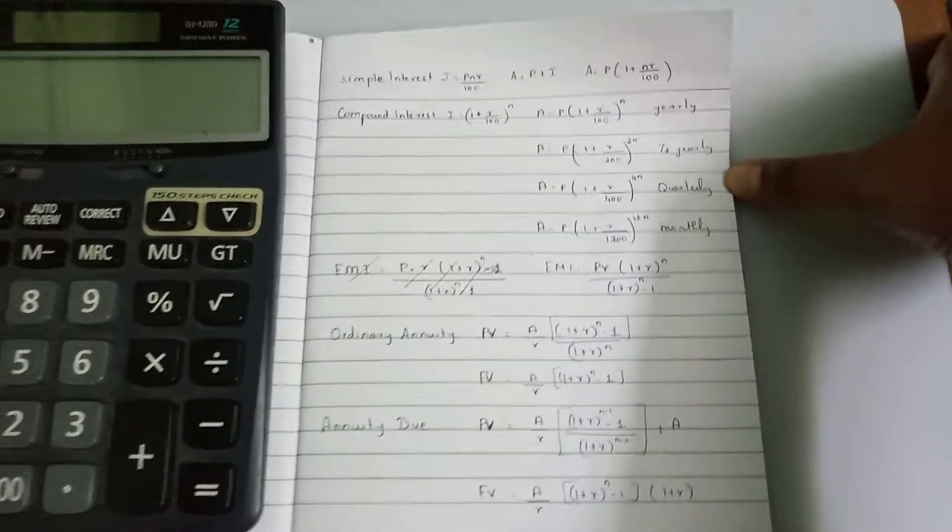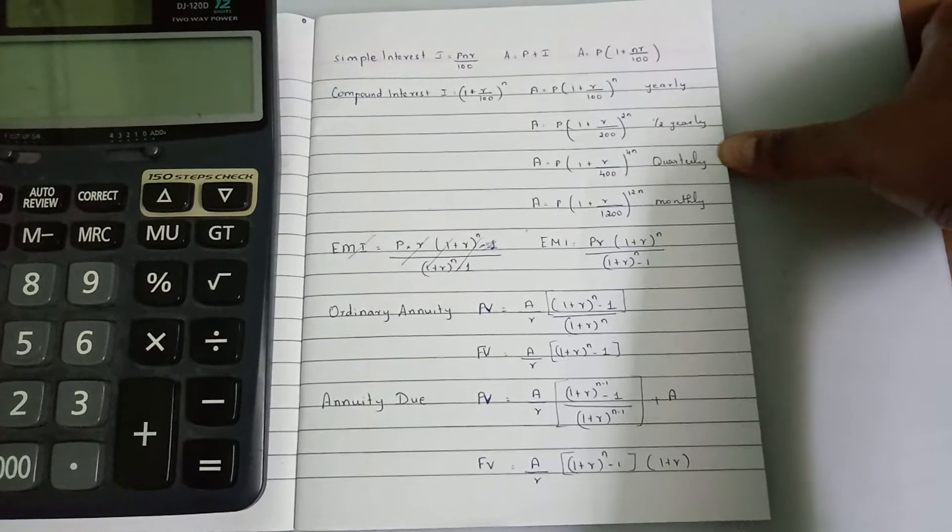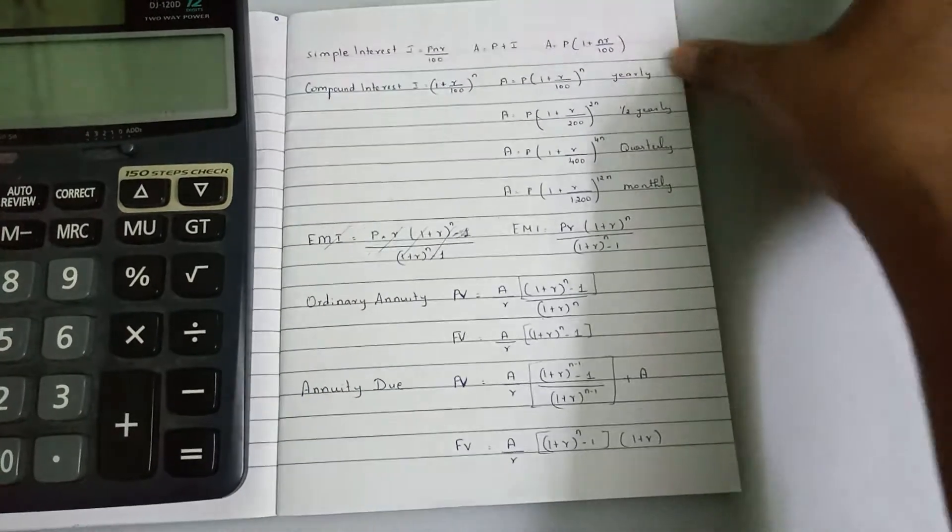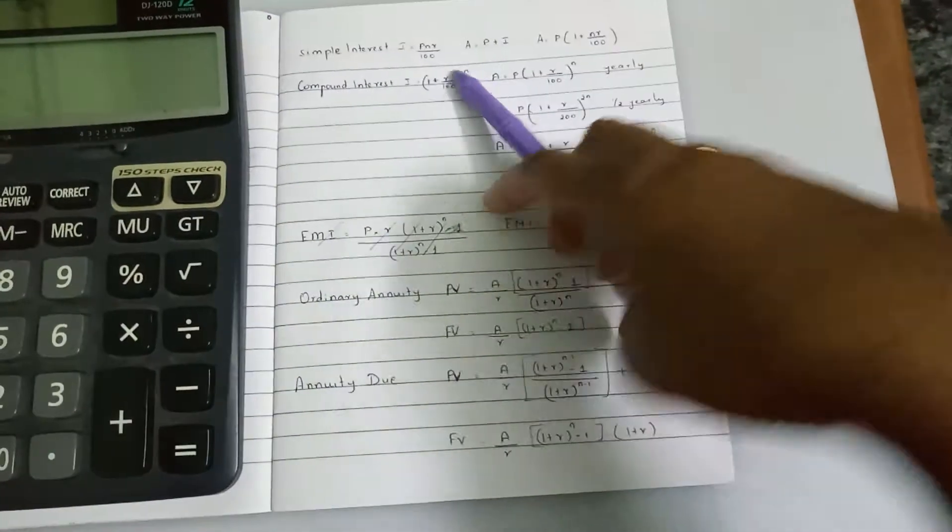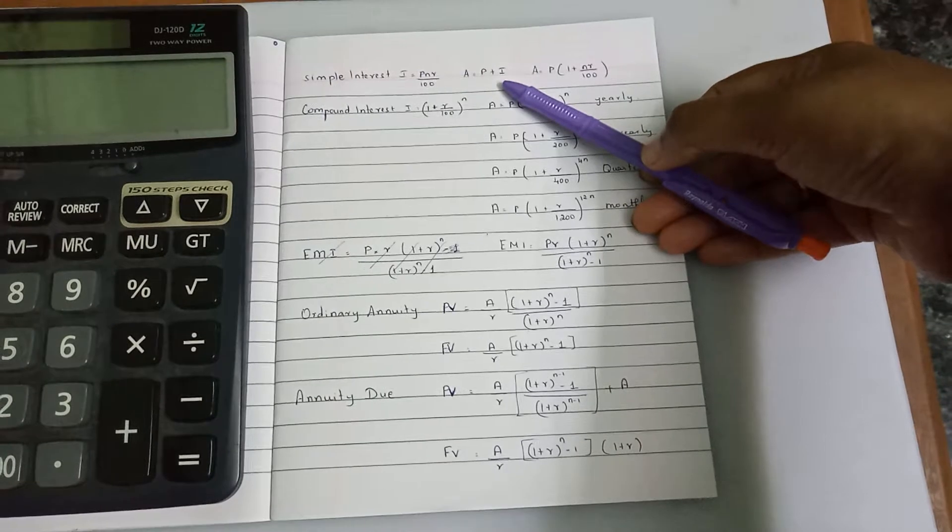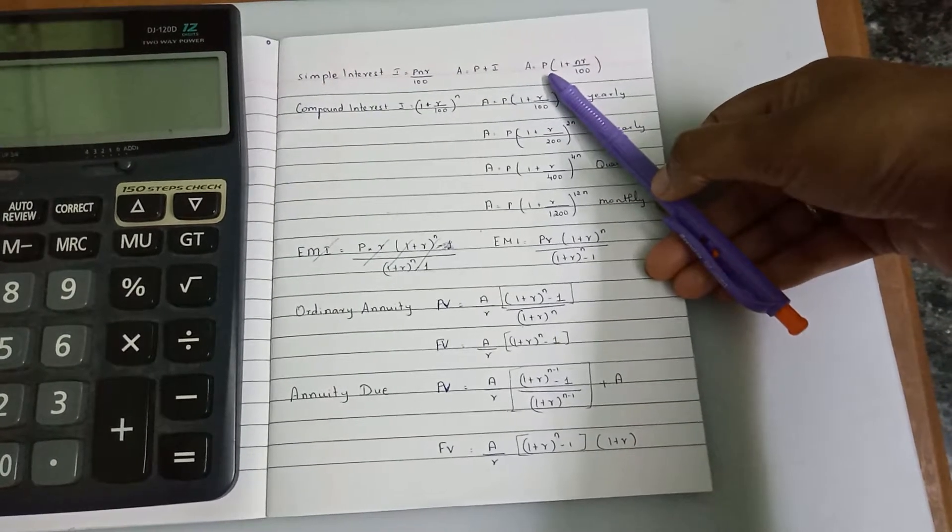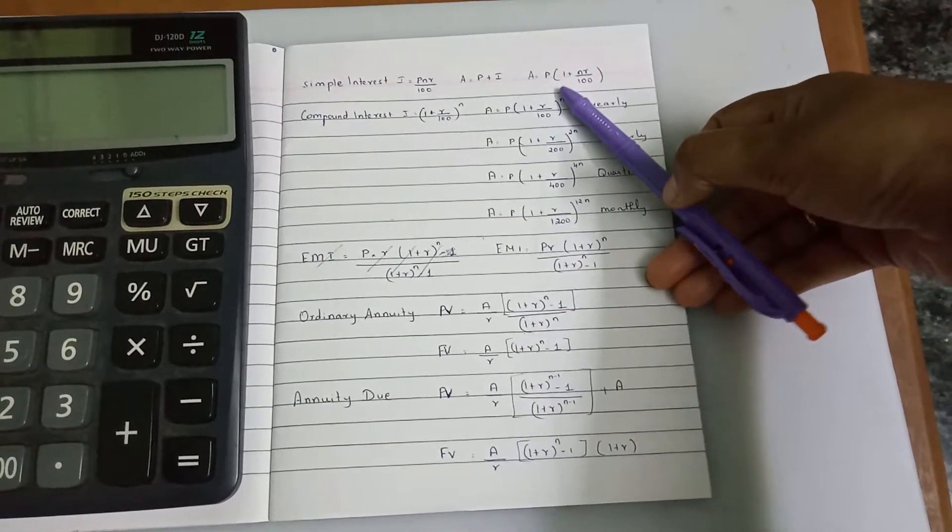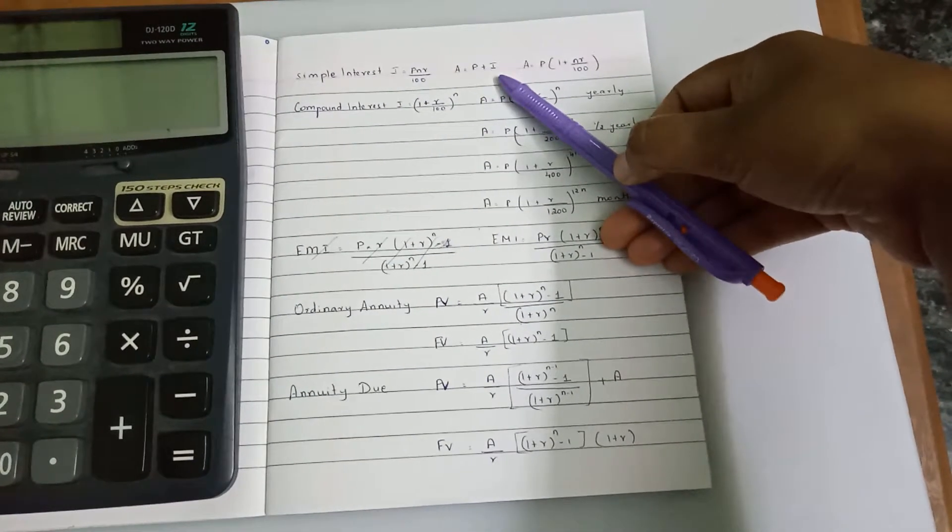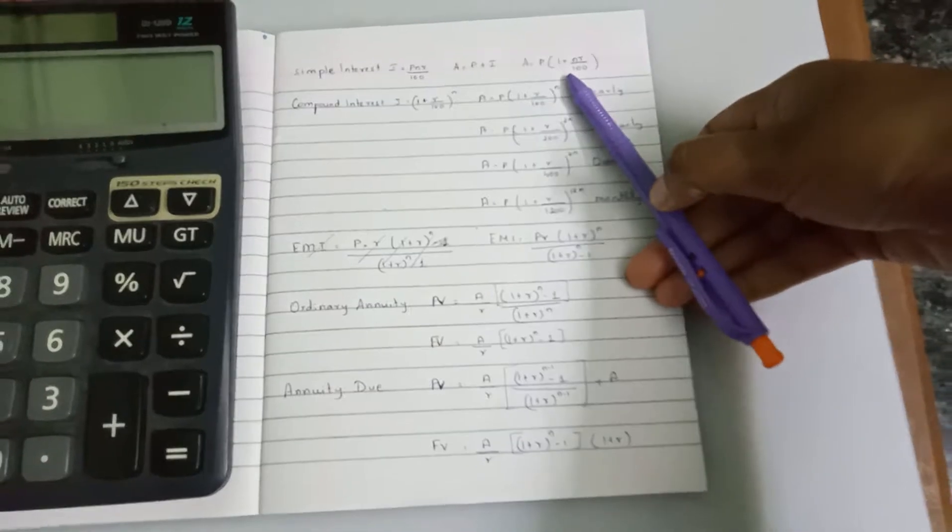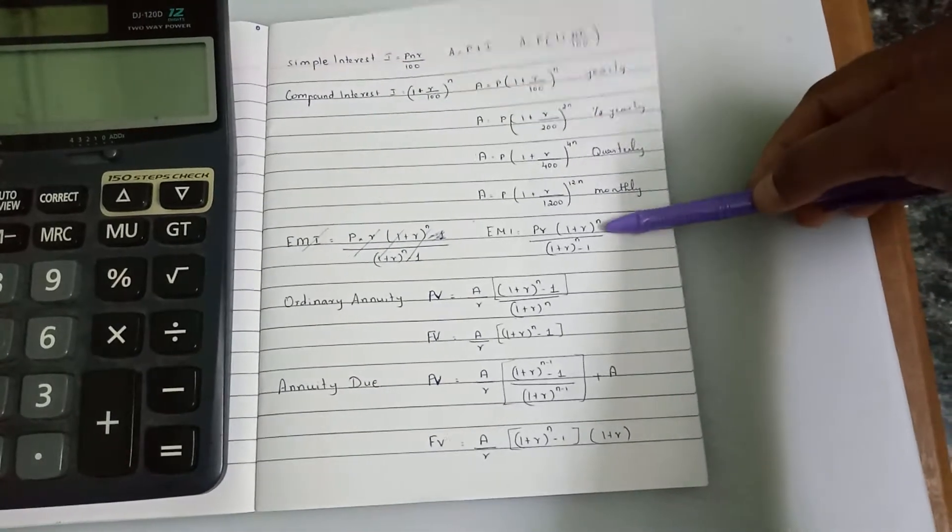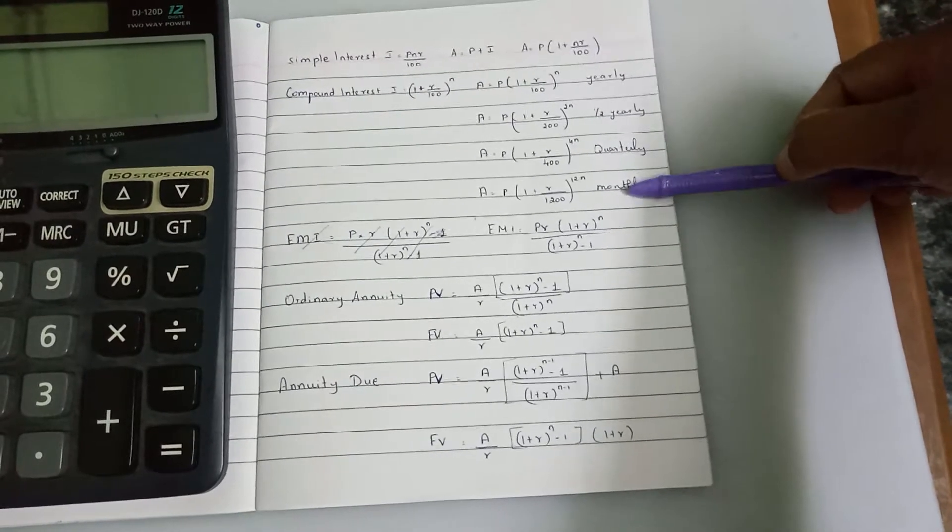First, simple interest. The simple interest formula and total value is principal plus principal times rate times number of years divided by 100. There are four methods in compound interest: yearly, half-yearly, quarterly, and monthly.